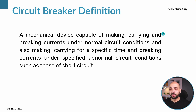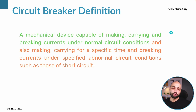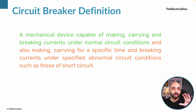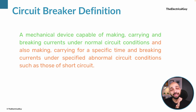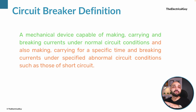It looks like a very big definition but I'll make it easy. You have to split this definition into two portions: the first portion is where we talk about normal conditions, and the second portion is where we talk about abnormal conditions. Under normal conditions, the circuit breaker is a mechanical device capable of making — that is, closing operation — and also carrying the rated normal current. For example, if 145 kV is the system and 3150 ampere is the rated current, the circuit breaker is capable of carrying that normal current continuously.